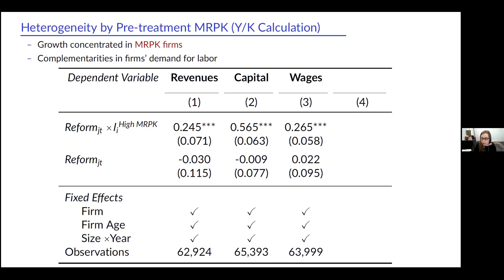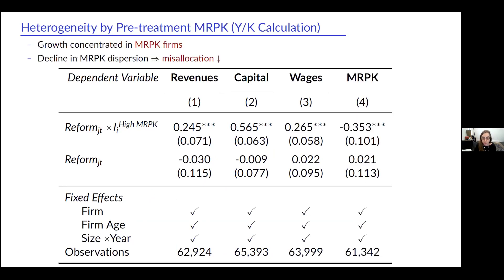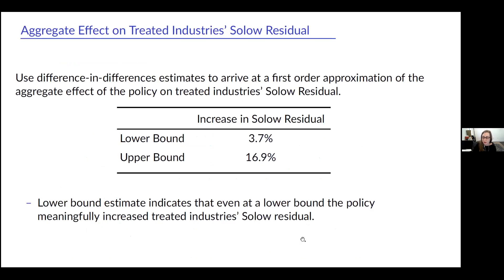These firms also increase the wage bill by about 27%. And importantly for the misallocation story, their marginal revenue products of capital fall by 35%, which is consistent with misallocation falling. We then use these differences-in-differences estimates to arrive at a full total approximation of the aggregate effect of the policy on treated industries' Solow residuals. We get a lower bound that the policy increased aggregate productivity by about 4%, and an upper bound of 17%.